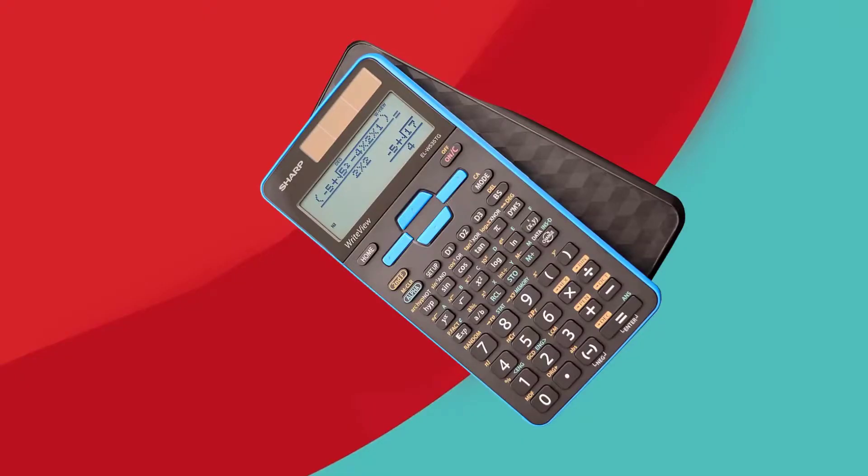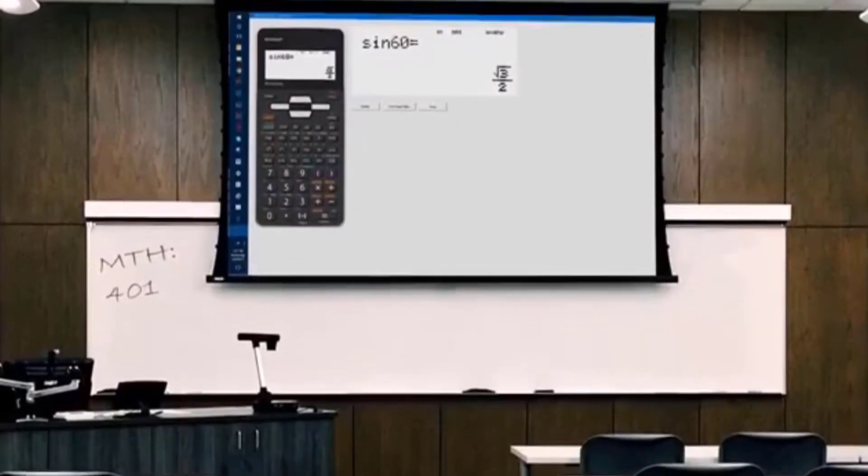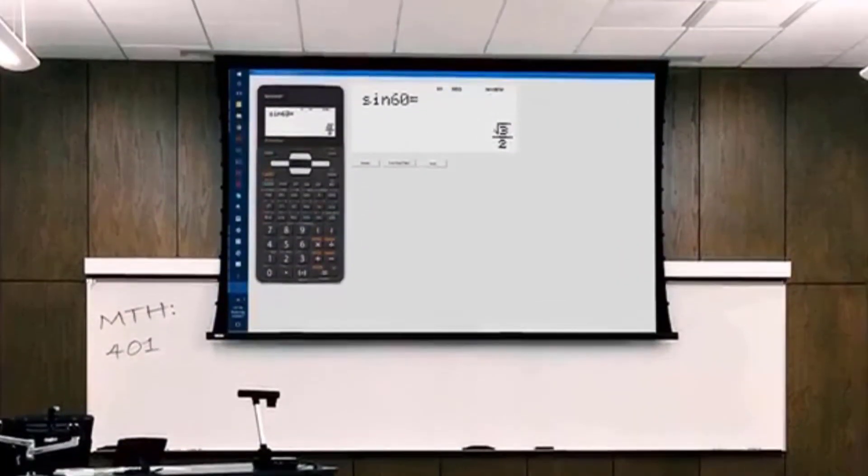16-digit 4-line LCD with right view makes scientific equations easier to solve because calculations can be entered and viewed exactly as they would be written.